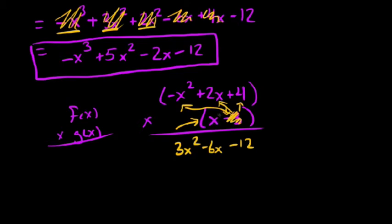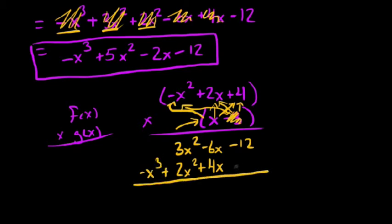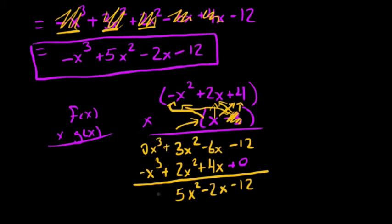Next we move to x. We say x times 4 is 4x — and I'm stacking it underneath the negative 6x to line up place values. x times 2x is positive 2x squared. And x times negative x squared is negative x cubed. Now summing the two rows: negative 12 plus 0 is negative 12. Negative 6 plus positive 4 gives us negative 2x. For x squared, 3 plus 2 gives us 5x squared. And 0 plus negative 1 gives us negative x cubed. We get the same result as when we did this horizontally.